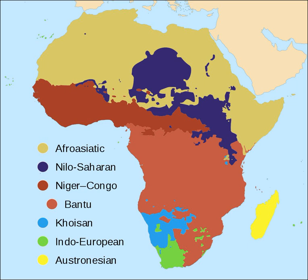The earliest Afroasiatic languages are associated with the Kaptian culture, the Nilo-Saharan languages are linked with the Khartoum Mesolithic and Neolithic, the Niger-Congo languages are correlated with the West and Central African hoe-based farming traditions, and the Khoisan languages are matched with the South and Southeastern Wilton Industries. More broadly, the Afroasiatic family is tentatively grouped within the Nostratic superfamily, and the Nilo-Saharan and Niger-Congo phyla form the Niger-Saharan macrophylum.